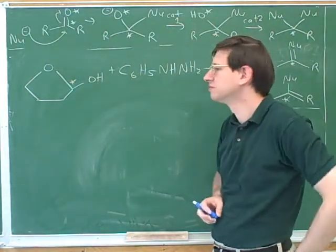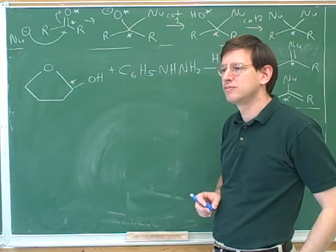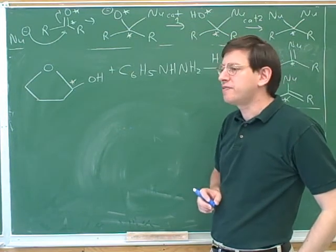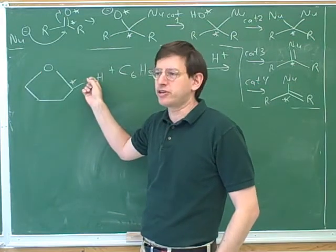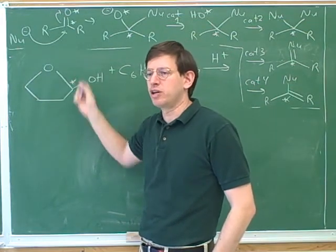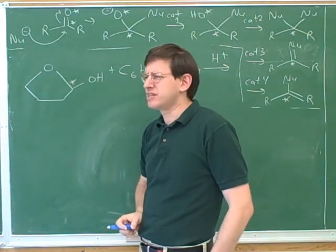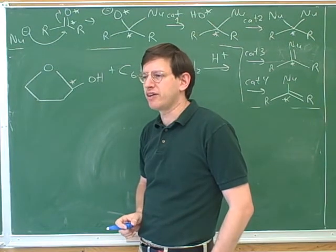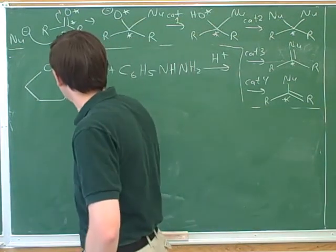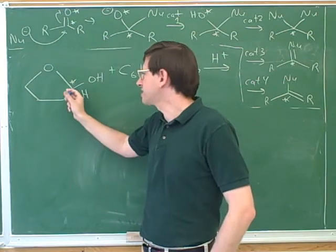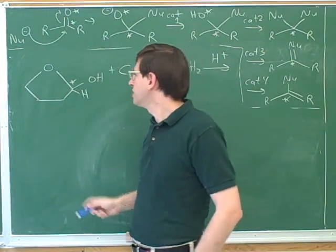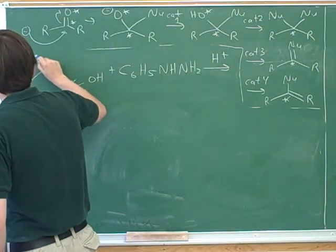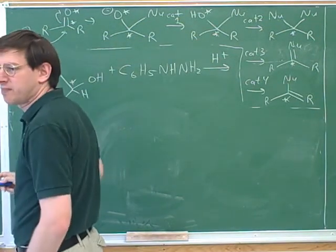First of all, it's definitely hemi and not full, because there's only one OR group and one OH group. Half and half. One OR group and one OH. But this does look like it came from a ketone or an aldehyde. Aldehyde? Because there's a hidden hydrogen. Right? This carbon here is only bonded to one carbon chain. And then there's the hidden hydrogen. So this is a hemiacetal, or better, a cyclic hemiacetal.